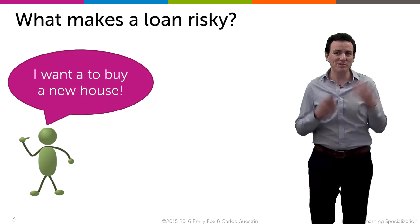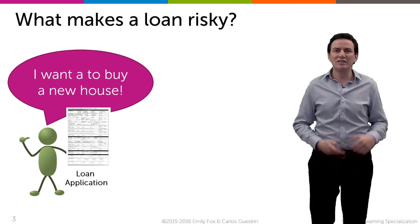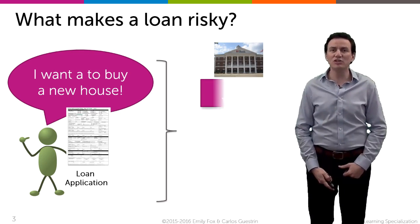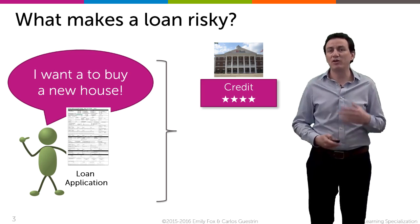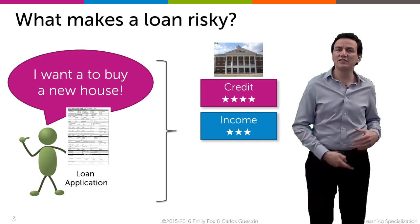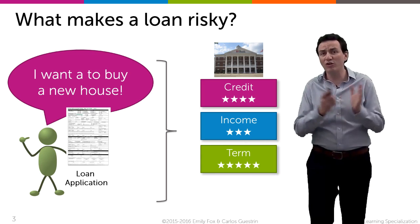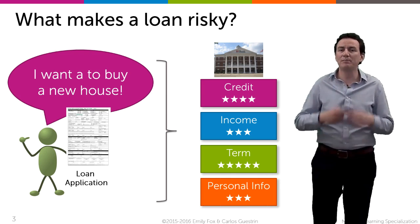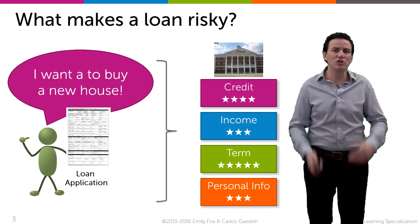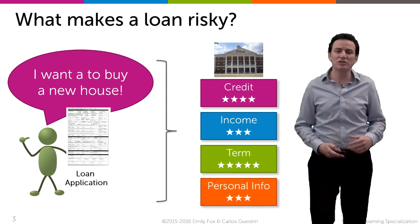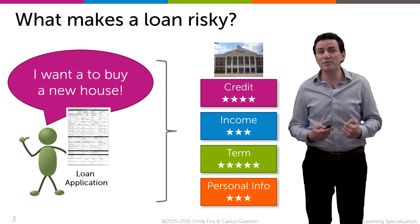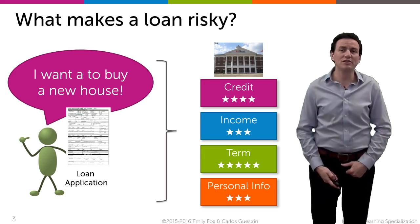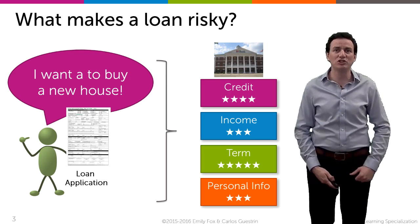Let's say I want to buy a house — I'm excited and to buy it I don't have all the money, so I need to take a loan from the bank. The bank is going to look at some properties of my history like my credit, what it's been like in the past, how much money I make, how long my loan is, how much time I'm willing to spend before I pay it off, and other personal information like my gender, age and so on. It's going to take that information and try to make a prediction as to whether loaning me money is a risky thing or not.